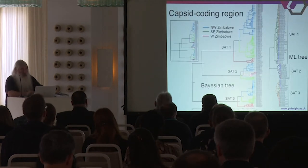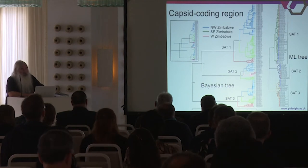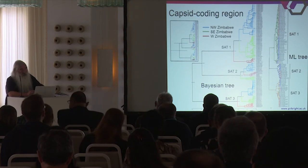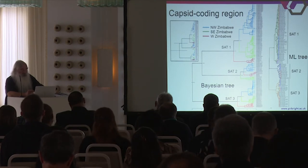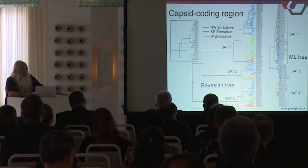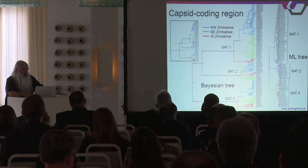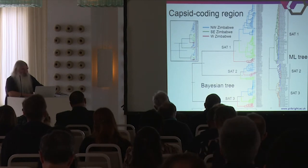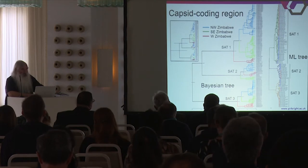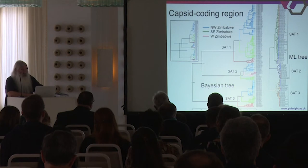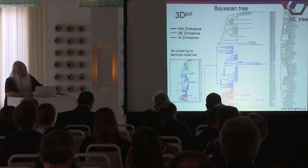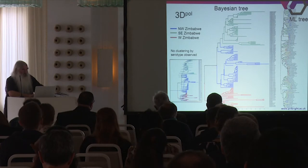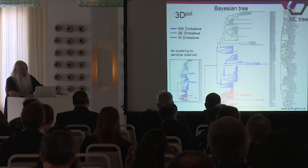Here is a Bayesian tree and a maximum likelihood tree of the complete capsid region except VP4. VP4 doesn't show serotype specificity, and we think this is also where recombination points quite often occur. The trees clearly separate into SAT1, SAT2, and SAT3, and the different colours represent the three geographic regions of Zimbabwe. When we looked at the 3D polymerase separately, there is no separation by serotype at all — they are all mixed in together.